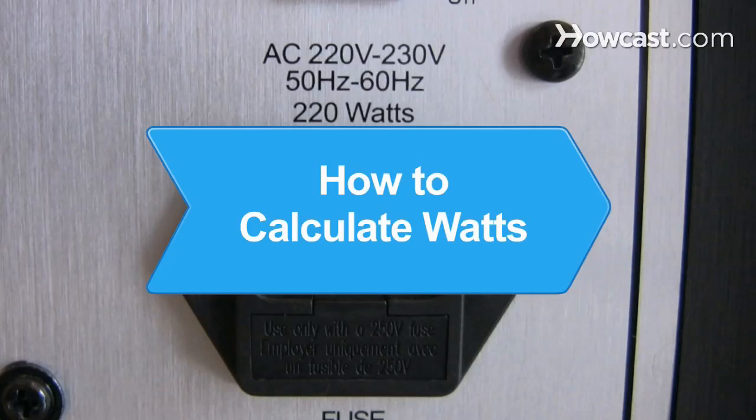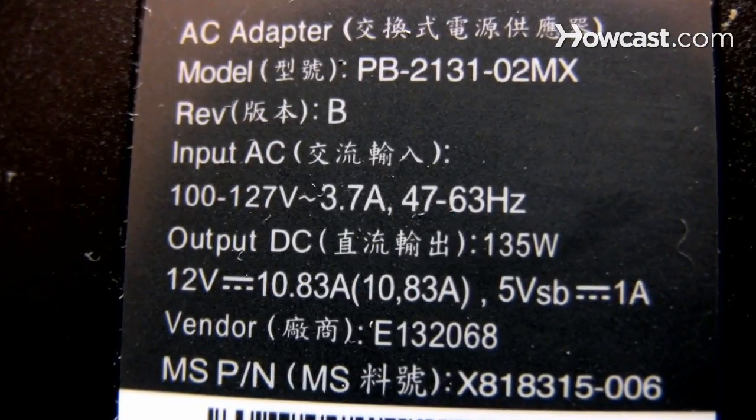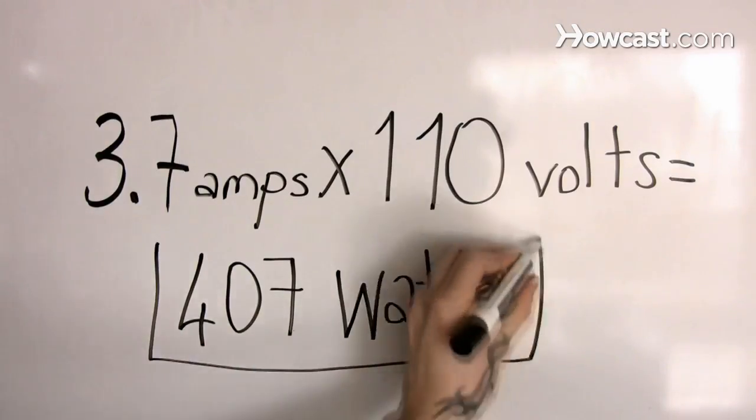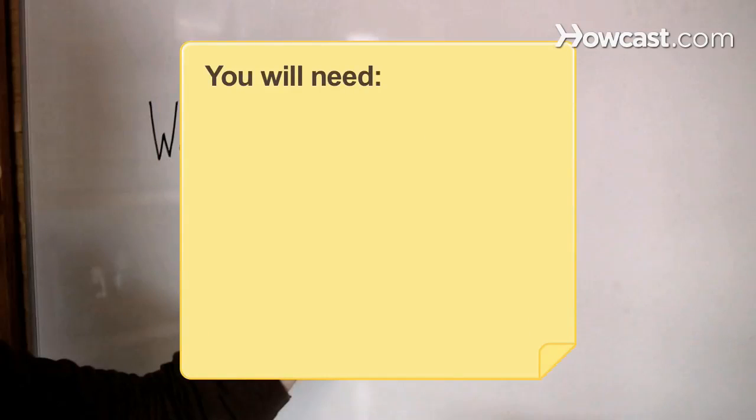How to Calculate Watts. The amount of power drawn by a household appliance is given in watts. Here's how to calculate wattage. You will need an appliance and mathematical formulas.